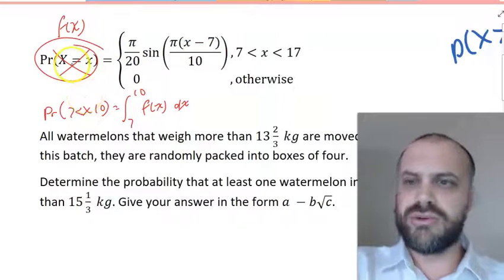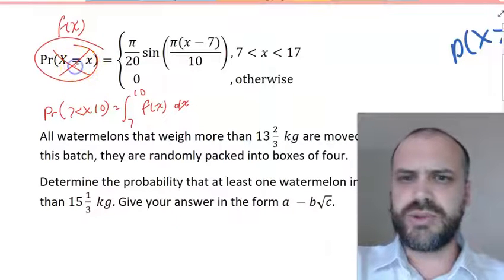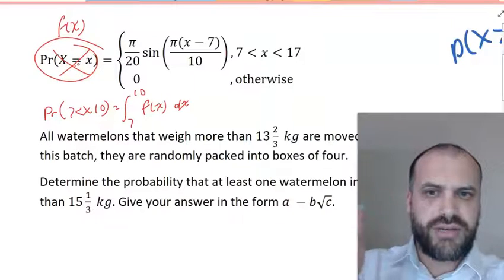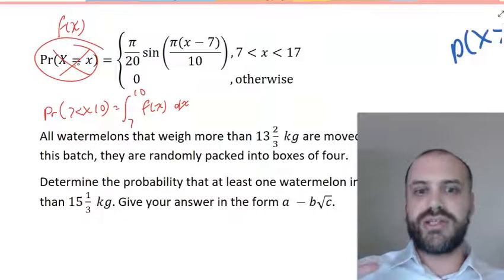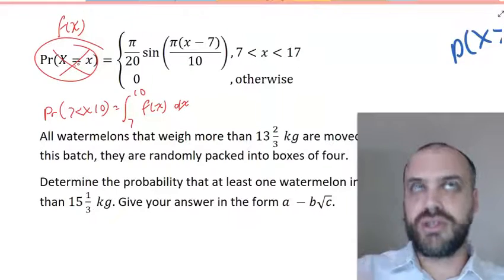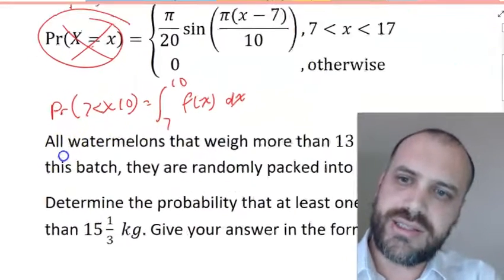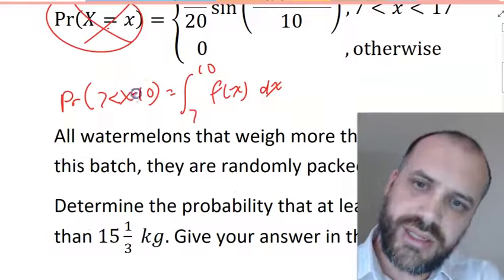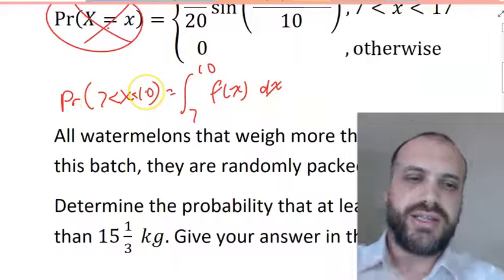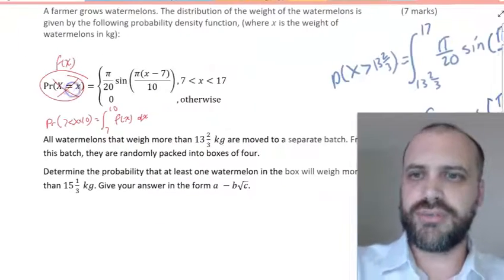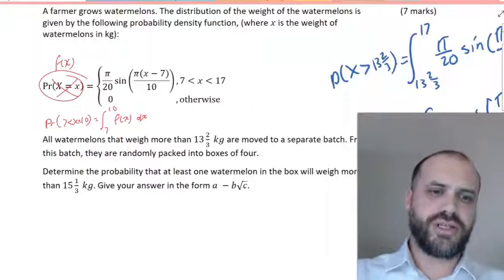The reason I said not that is because that equal sign there is reserved for things that have discrete values. And a probability density function, this is a continuous random variable. So we're going to have less thans, 7 less than x less than 10. We're going to have bounds that we need to be working within. So don't know what I was thinking there, but it was on holidays.